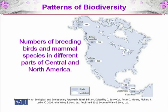Guatemala and Costa Rica are countries present towards the equator, while the US states California, British Columbia, and Alaska are at much higher latitudes towards the poles.